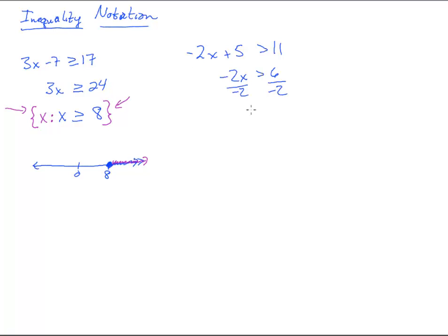Don't forget that rule right there where you have a negative. You've got to switch that sign direction. And so we get x is less than negative 3.